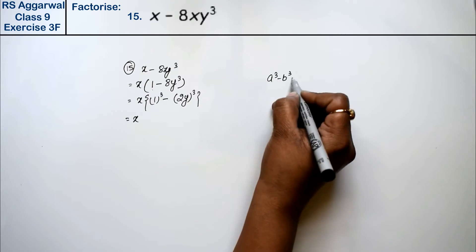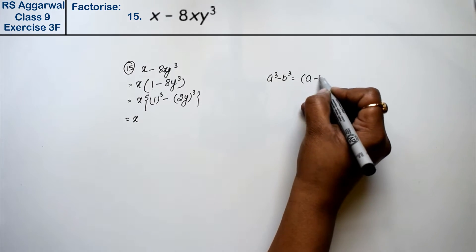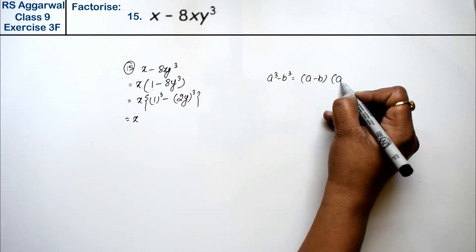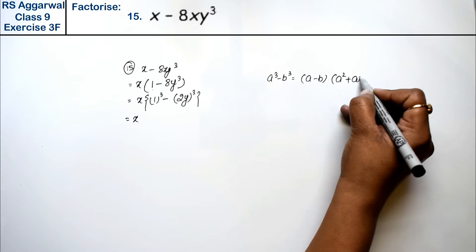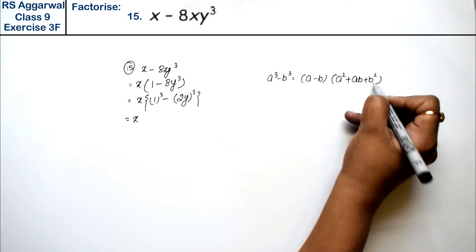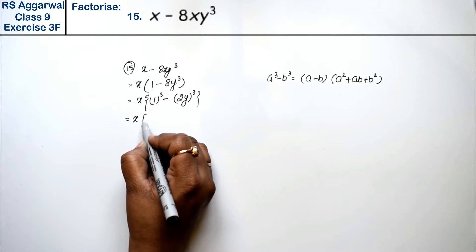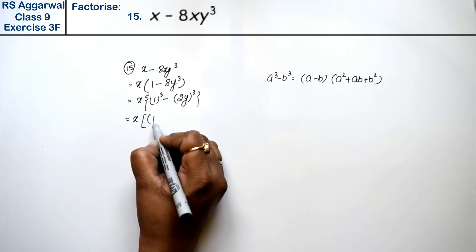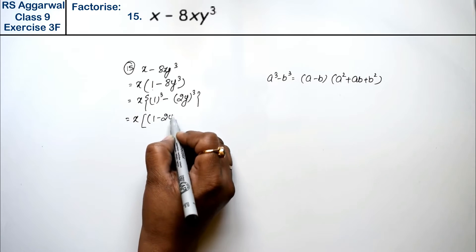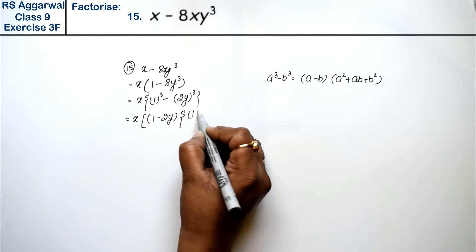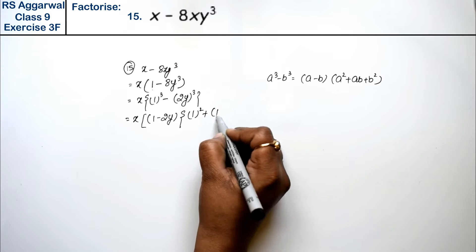Now a cube minus b cube formula, what was that? That is a minus b, a square plus ab plus b square. So this is a big bracket, a minus b: 1 minus 2y, smaller bracket, 1 squared plus 1 into 2y...